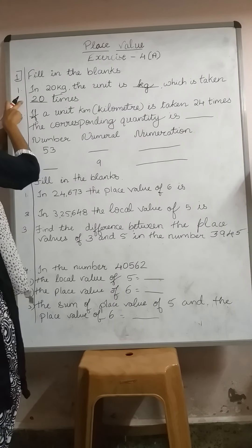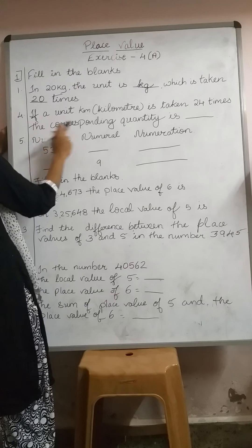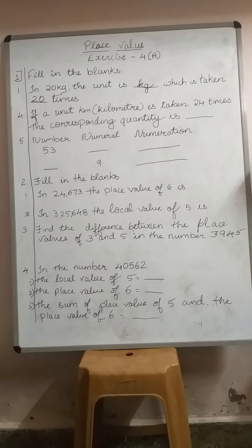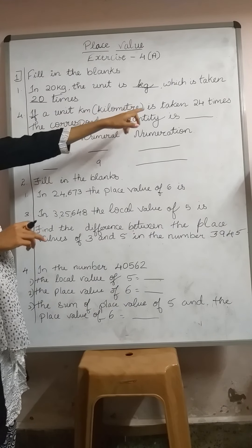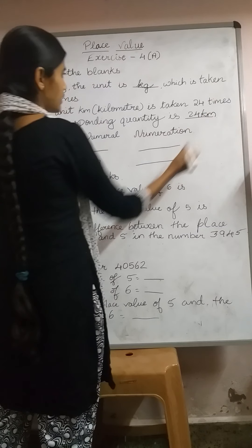Next we have the fourth question — number 2 and number 3 you need to solve on your own. If a unit km is taken 24 times, the corresponding quantity is dash. The corresponding quantity is: write the numeral 24 and then write the unit — that is 24 km.